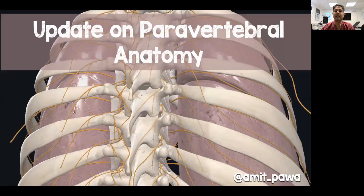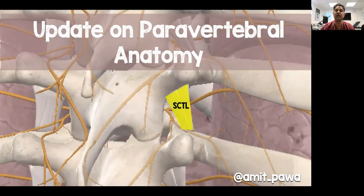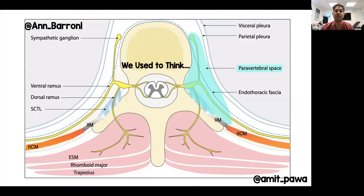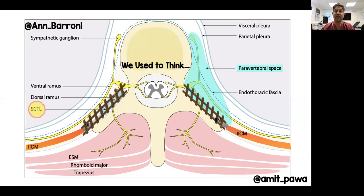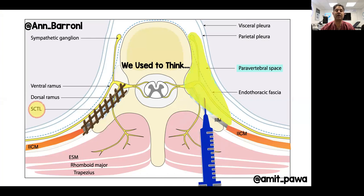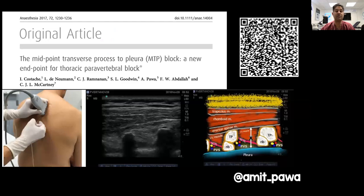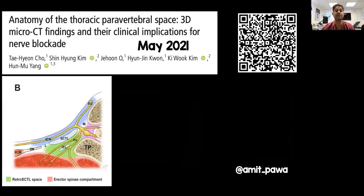I want to cover some paravertebral anatomy, focusing on the superior costo-transverse ligament. Traditionally — as in this diagram created by Anne Barron, a previous fellow of mine — we thought the superior costo-transverse ligament acted as a formal barrier to the paravertebral space, and that the needle had to be placed on the other side of this barrier. But we've subsequently seen, with the MTP paper — now called the inter-transverse plane block — published by Iwanda, Kostash and my Canadian colleagues, that needle tip position posterior to the superior costo-transverse ligament still reliably generates local anaesthetic spread into the paravertebral space.